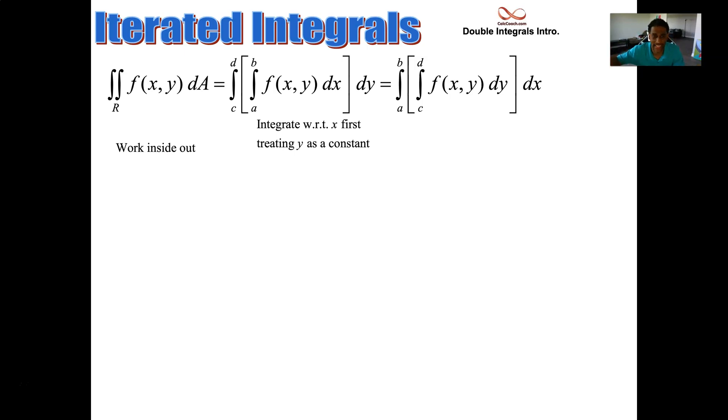So now, when you're integrating with respect to x, you're going to hold the other variable constant, treating y as a constant. Then when you're done with that, you're going to have a formula that's in terms of y. And that'll be for your outside integration. All the x's should be gone at that point.